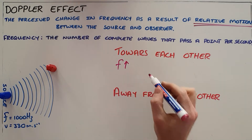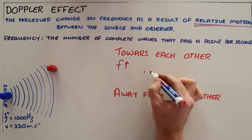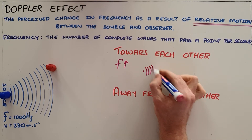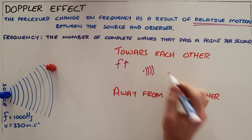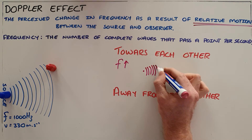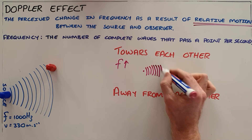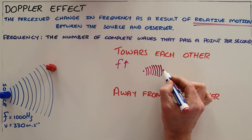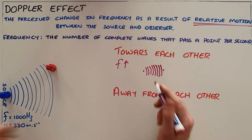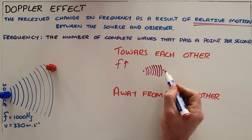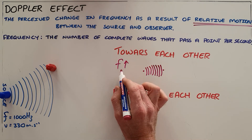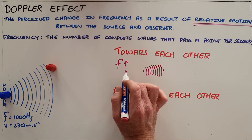This is because as a result of that motion and them moving towards each other, those waves appear to condense — meaning get closer together — which means that the observer detects more waves per second and therefore a higher frequency.